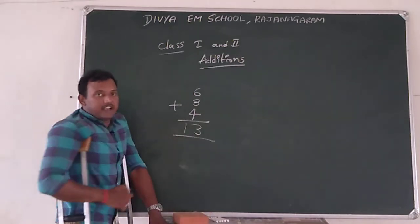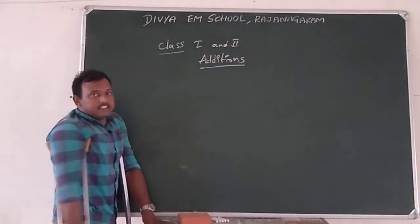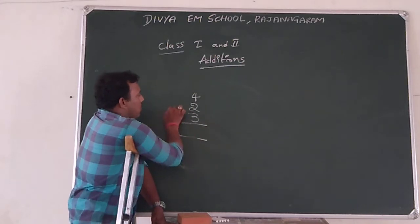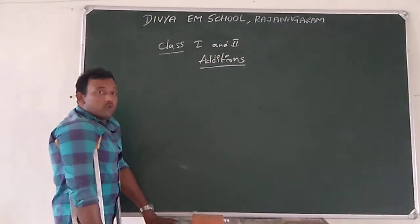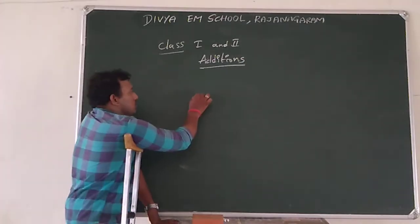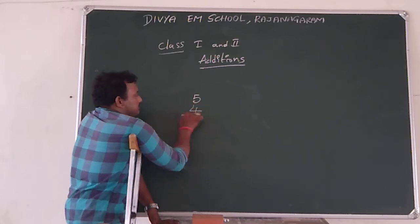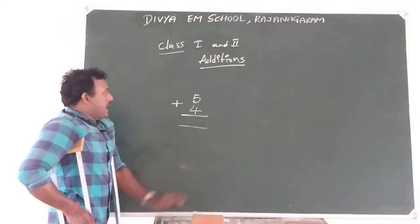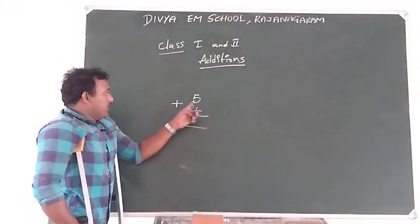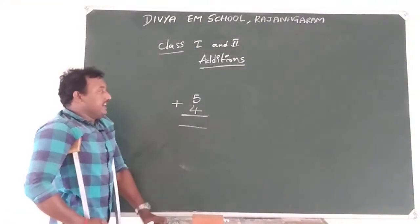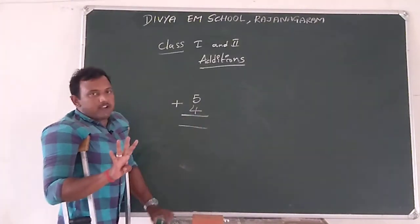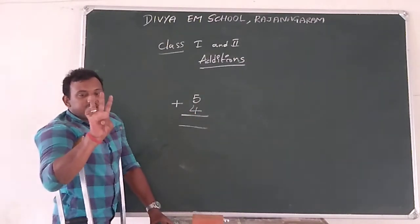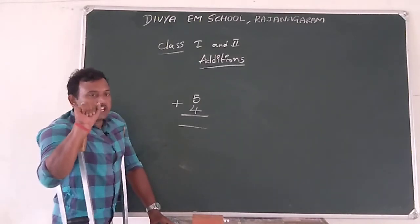Like this, you can add numbers using our fingers. We can take another example: 5 plus 4. Now we are going to take 5 and 4. Keep it in mind, 5 is your first number. We are going to add 4 to 5. The second number here is 4. I am taking 4 fingers and adding 4 to 5. After 5, count: 6, 7, 8, 9. So the total is 9.